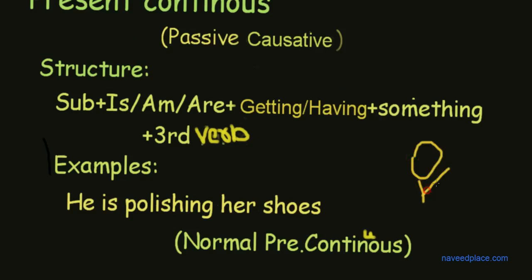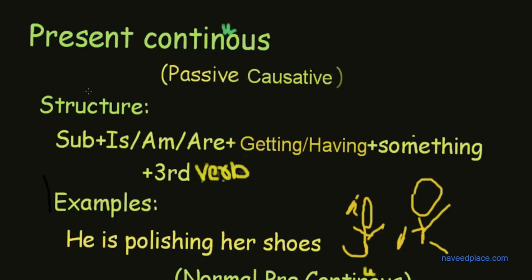He is polishing her shoes. For example, he is polishing her shoes, her shoes for example here. So definitely this is the normal present continuous example.